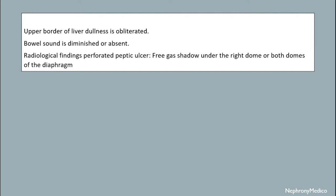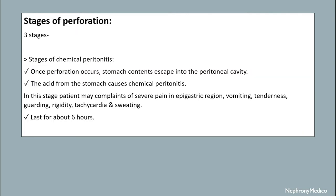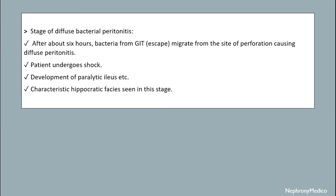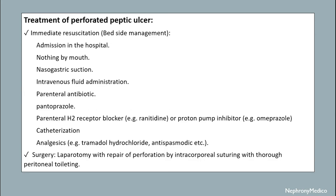There are three stages of perforation. The first stage is chemical peritonitis. The second is the stage of dilution or illusion. The third is the stage of diffuse bacterial peritonitis, in which the patient undergoes shock.